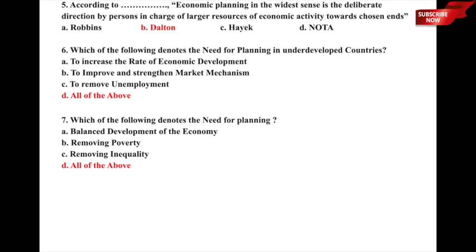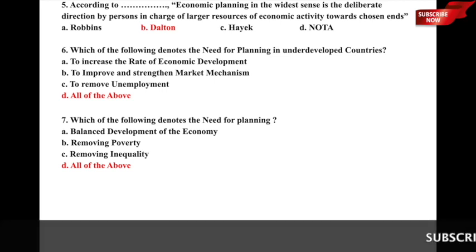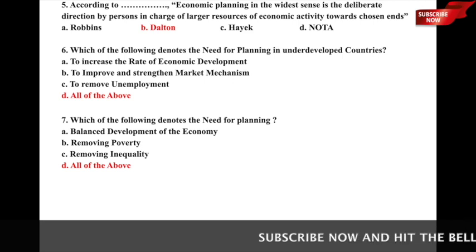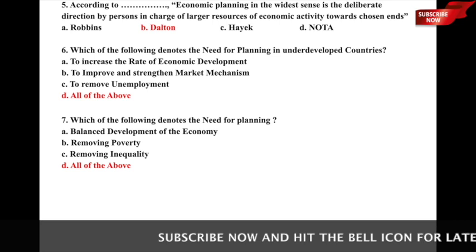Question 6: Which of the following denotes the need for planning in underdeveloped countries? The options are a) to increase the rate of economic development, b) to improve and strengthen market mechanisms, c) to remove unemployment, or d) all of the above. The correct answer is option d) all of the above.